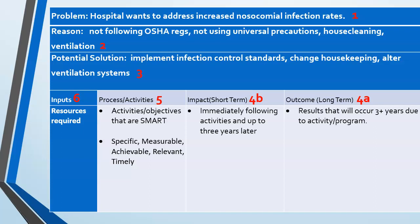The third item on the list is to list your potential solutions, and you should have a solution for every reason. For example, implementing infection control standards would address OSHA and universal precautions issues; we might need to train the housekeeping staff, or possibly change housekeeping companies; and we might need to address the ventilation system. Those are all the reasons and all the possible solutions for those reasons.